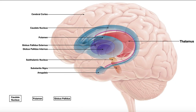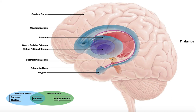Now, a few pieces of terminology. If we consider the caudate nucleus, the putamen, and the globus pallidus — specifically grouping the caudate nucleus and the putamen combined — these are called the striatum, also called the neostriatum. Those are synonymous terms. If we group the putamen and the globus pallidus together without the caudate, this is called the lenticular nucleus or lentiform nucleus, which includes both parts of the globus pallidus — externus and internus — and the putamen.